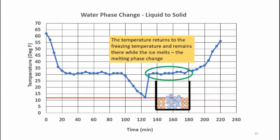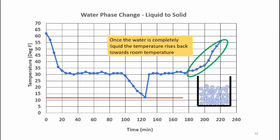While the ice melts and transitions from a solid to a liquid, the temperature remains constant at 32 degrees Fahrenheit. There is a diagram here showing the crystalline ice and the water in the container. Once all the ice becomes liquid, the temperature can once again start climbing towards the ambient outside room temperature, and everything in the container is now a liquid.